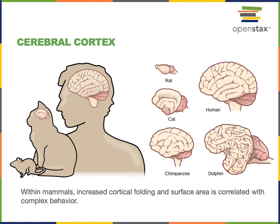We can see that the chimpanzee, our closest relative here, has a less wrinkled brain than the human brain. We can also see that the dolphin has a very large cerebral cortex, and it's thought that this is because they have a very complex environment — they are navigating a complex social world and have very complex behavior. Similarly, humans have a complex repertoire of behaviors and navigate a complex social world that requires a large amount of cerebral cortex surface area.